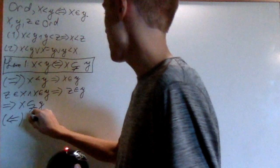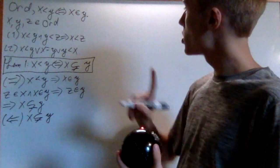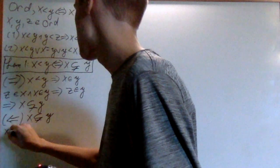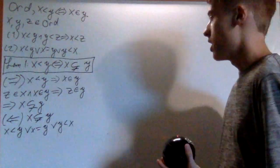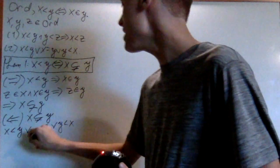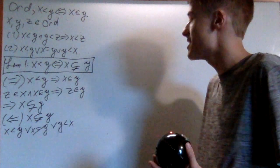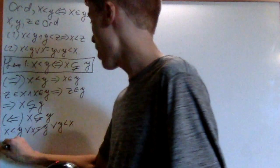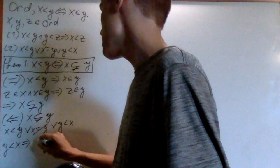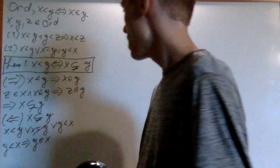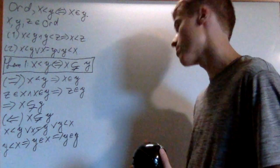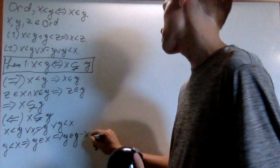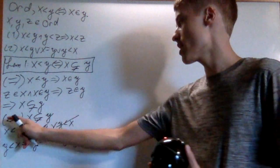The backwards direction is also pretty easy. If I have x a proper subset of y, by the trichotomy condition there are only three things that could happen: x is less than y, x could be equal to y, or y is less than x. Well, the equality case is immediately ruled out because we guaranteed it's a proper subset. And if y were less than x, that would mean y is an element of x, which by the fact that x is a subset of y would mean y is an element of y — which is against one of the axioms. That's a contradiction, so we can cross that out and we get x is less than y.